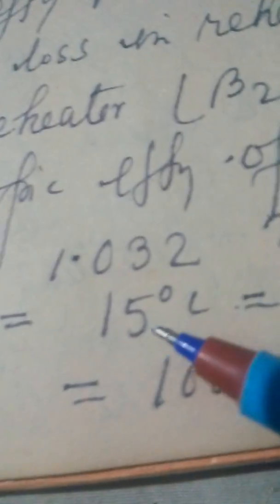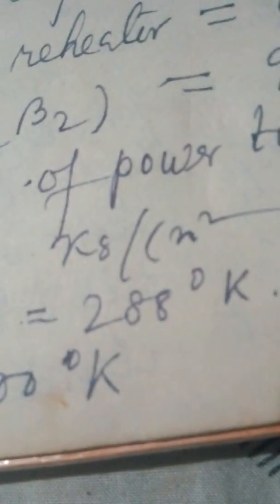Ambient temperature is equal to 288 Kelvin, not degree Kelvin. This is only Kelvin.